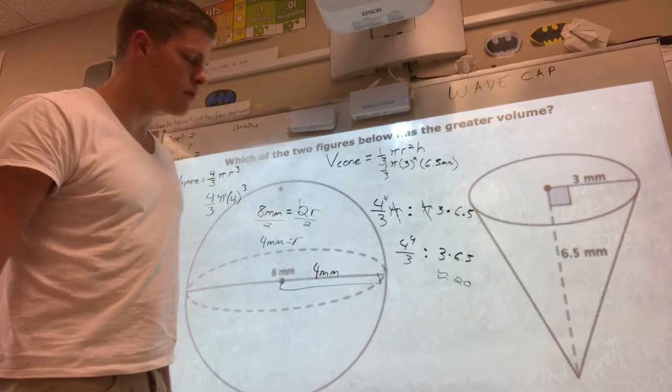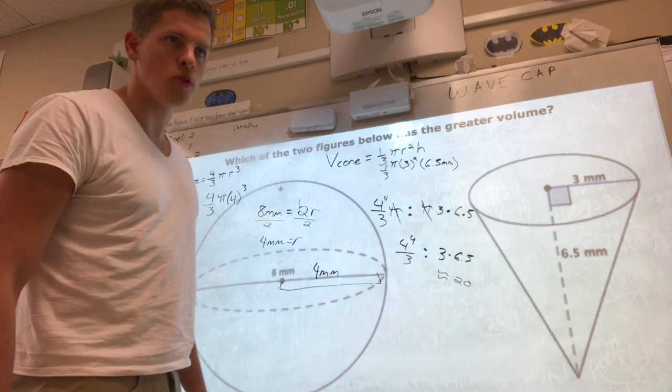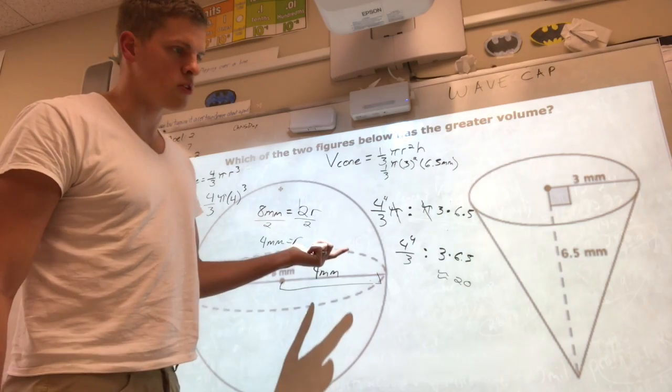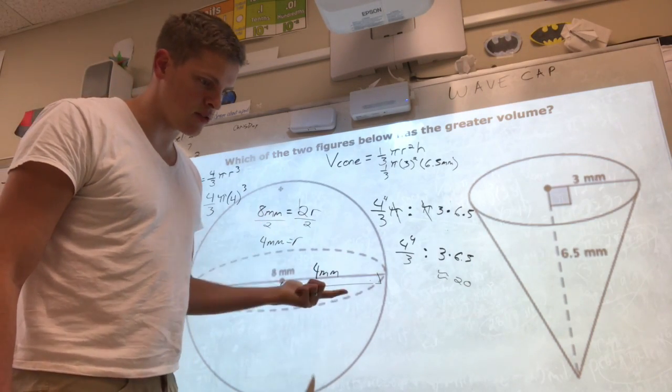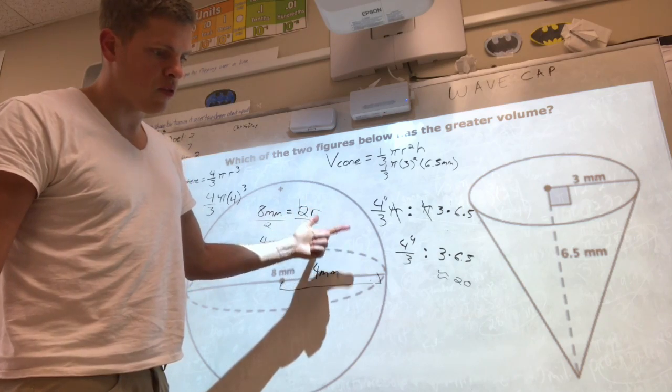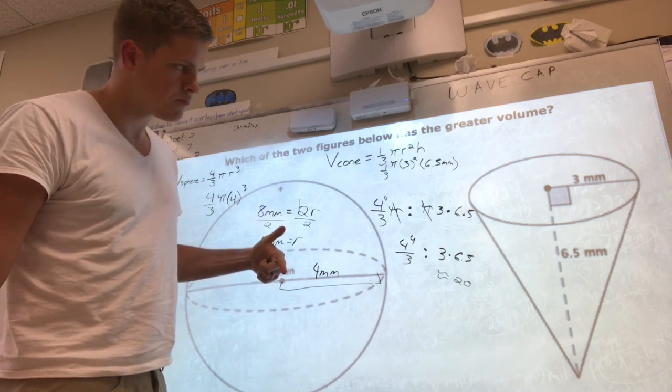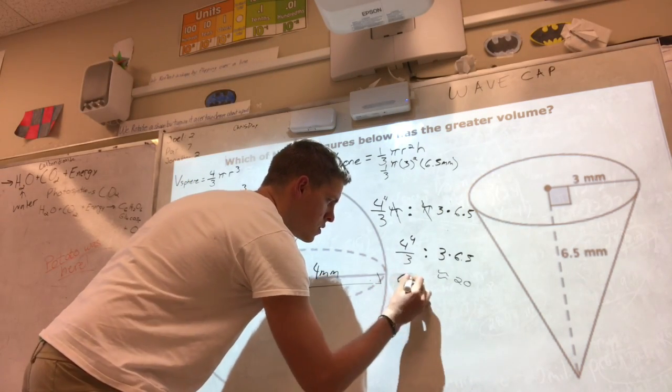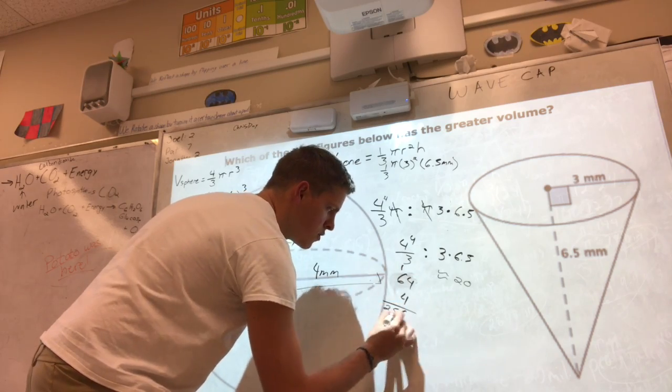And this over here, 4 times 4 times 4 times 4. So 4 times 4 is 16, times 4 is 64, times 4 is 256.